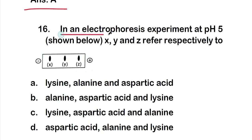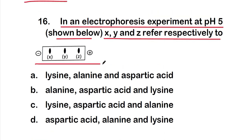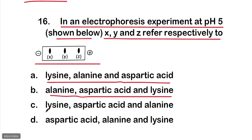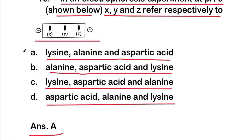Question 16: In an electrophoresis experiment at pH 5, X, Y, and Z refer to migration positions from negative to positive end. The options for the identity of X, Y, Z are: A) lysine, alanine, aspartic acid; B) alanine, aspartic acid, lysine; C) lysine, aspartic acid, alanine; D) aspartic acid, alanine, lysine. The right answer is option A — X is lysine, Y is alanine, and Z is aspartic acid.